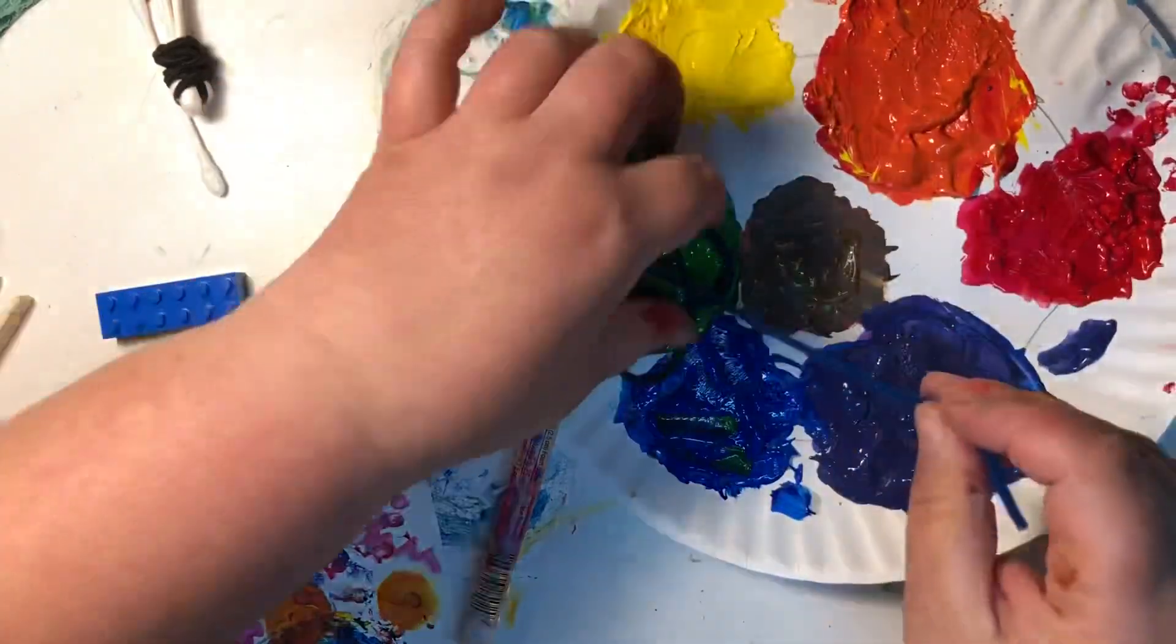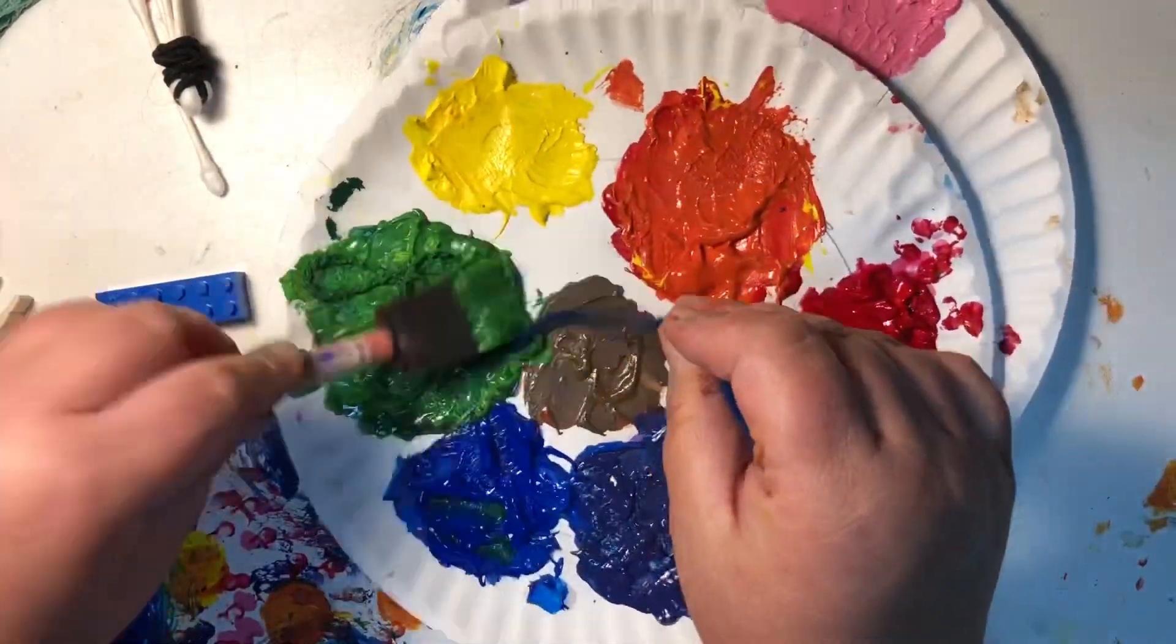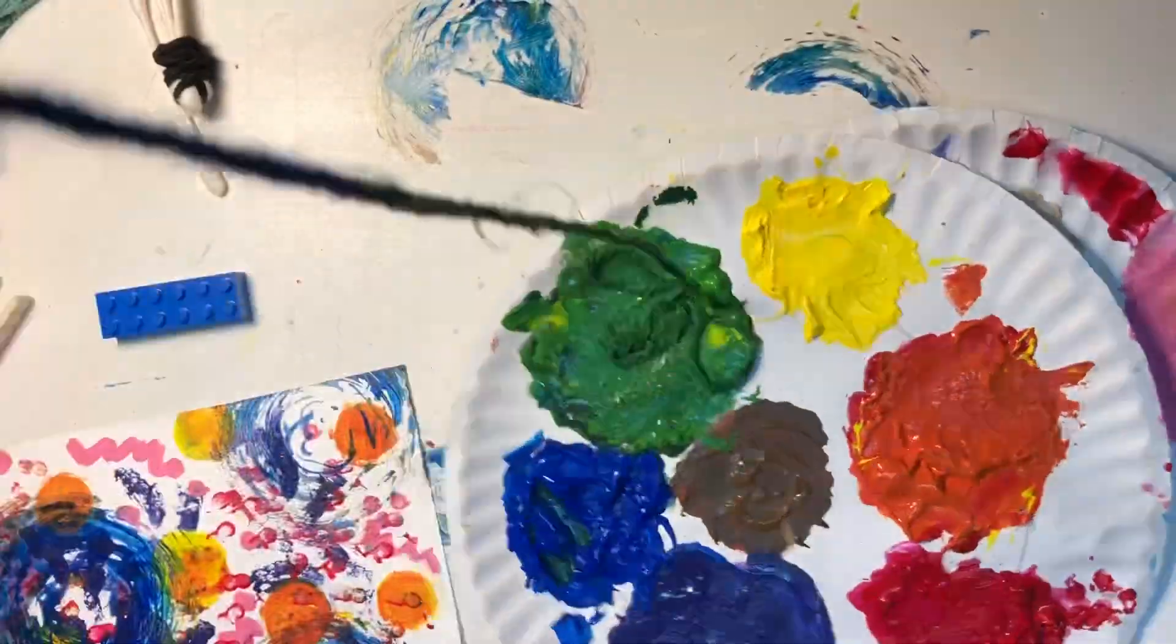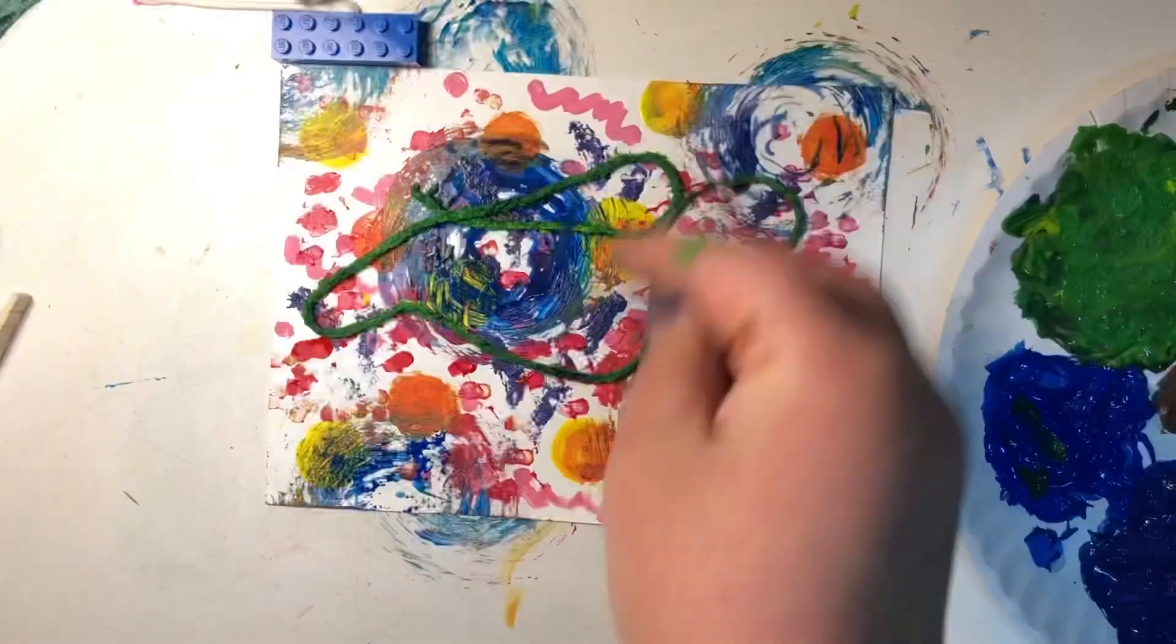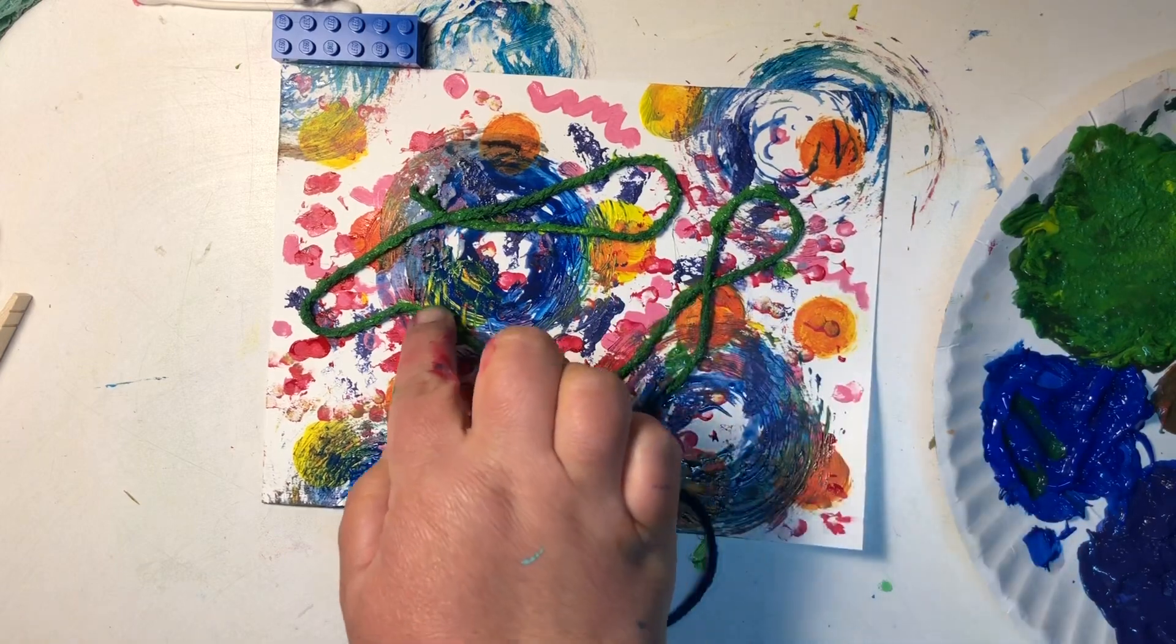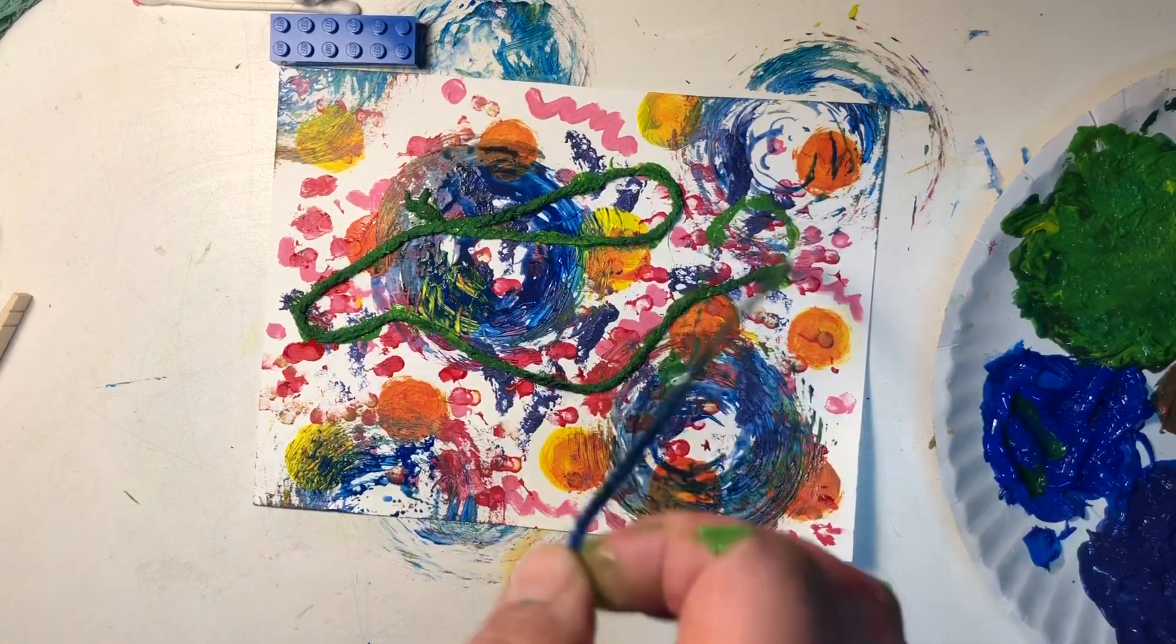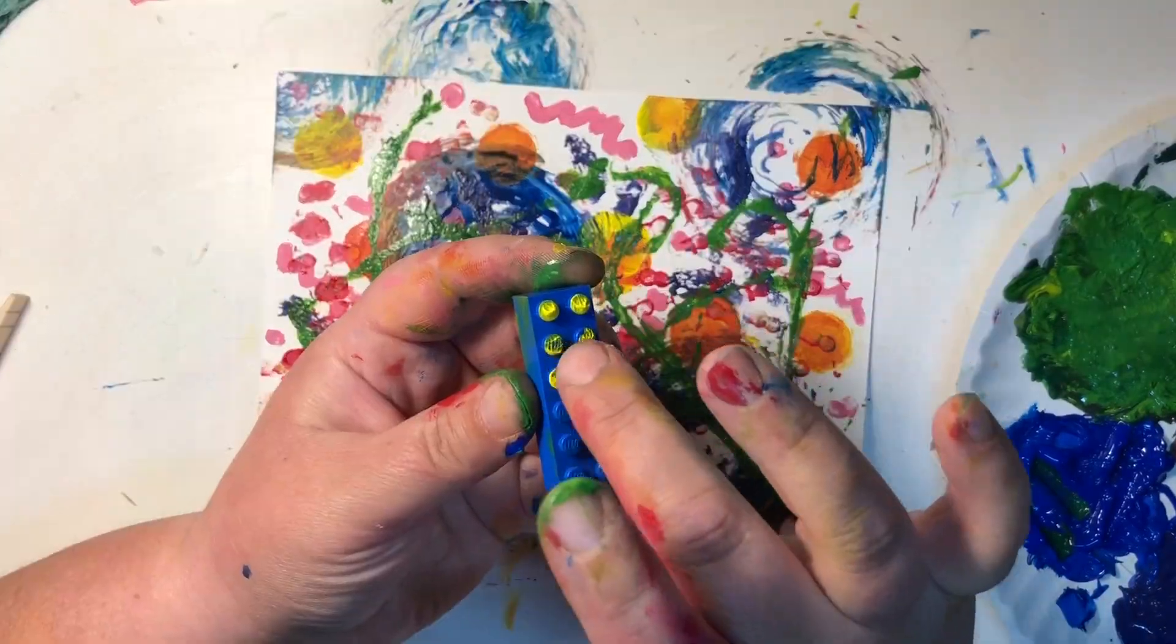When using string, you have to apply a lot of paint, so I used that foam brush once again. After I got my string super, super gooey with paint, I picked it up and I let it fall in an interesting way onto my painting. Then I used the pressure from my fingers to press it into the canvas the way that I like that line. Then I lift it up. Ooh, that's a cool line I made. I think I'll do it again.